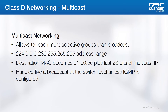Switches and routers with the right functionality can be configured to make sure multicast traffic reaches only the ports that want it. This functionality is referred to as the Internet Group Management Protocol, or IGMP. If a given switch doesn't support IGMP or it isn't enabled, then multicast traffic is effectively handled as a broadcast.